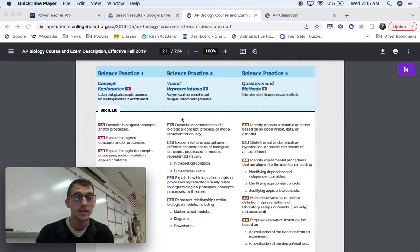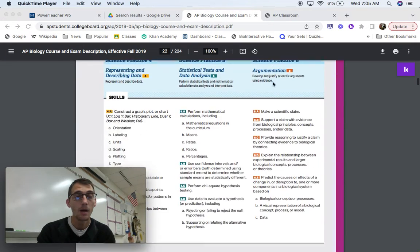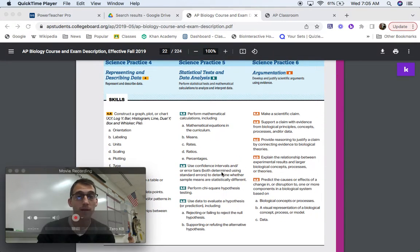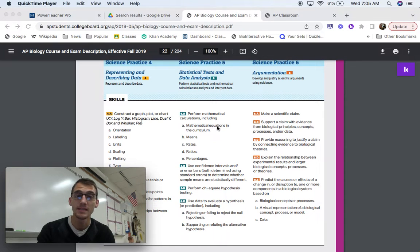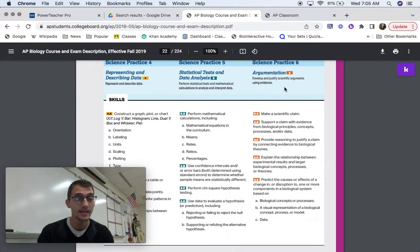And here they are. Here's the AP Biology course and exam description. Science practice one is concept explanation. Science practice two is visual representations. Three is questions and methods. Four is representing and describing data. Five is statistical tests and data analysis. And six is, of course, argumentation. So these are six different areas. This is what we're going to be dissecting and breaking down over the course of this series of videos.